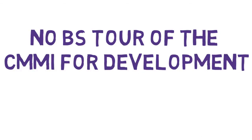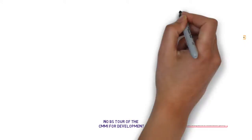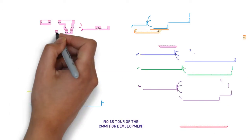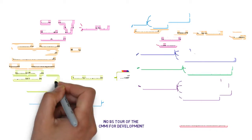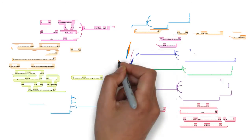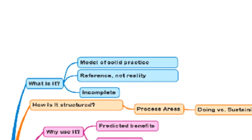Welcome to the No BS tour of the CMMI for Development. This is a series of short videos that explain, in a common sense way, what the CMMI is about, how it's structured, why it's useful, and the elements of the model. In each of the videos we'll talk about a different aspect of the model, and as we go we'll be able to see how the different parts, called process areas, fit together to make the model useful for reference.